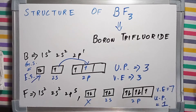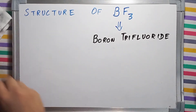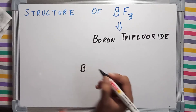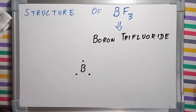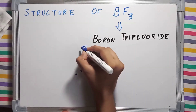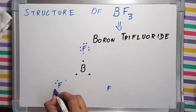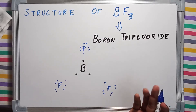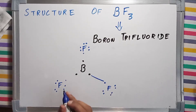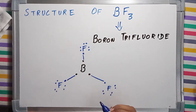Boron has three valence electrons and fluorine has seven valence electrons. We place one boron and three fluorines in the Lewis dot structure. Each fluorine wants to complete its octet, so it makes a single bond with boron. Similarly, the other two fluorines also complete their octets by bonding with boron. All three fluorines have now completed their octets.